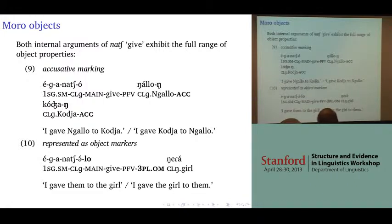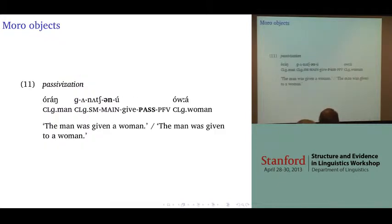Nine and ten are both ambiguous, so there's not a clear alignment between word order or what's showing up as an object marker and the semantic role.